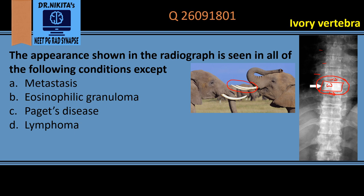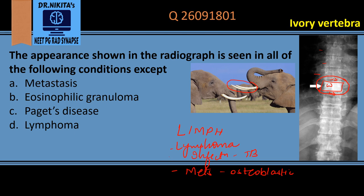The size and contour of the vertebra is maintained — it just becomes extra white. Ivory vertebra is seen in conditions remembered by the mnemonic LIMPH: L stands for lymphoma, I stands for infection like tubercular spondylitis, M stands for metastasis (osteoblastic metastasis like carcinoma prostate and carcinoma breast), P stands for Paget's disease, and H stands for hemangioma.